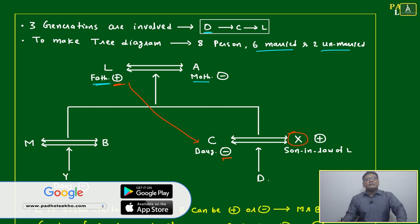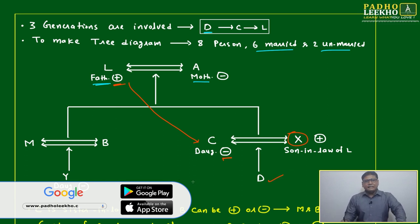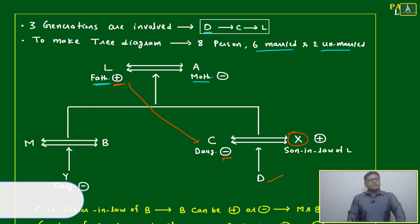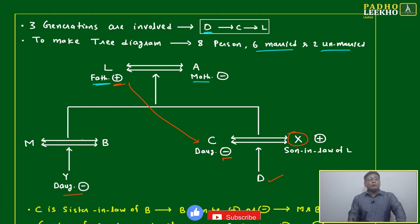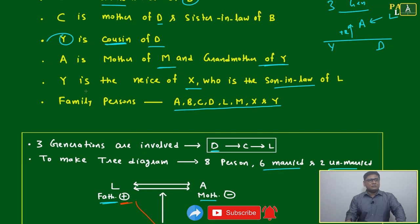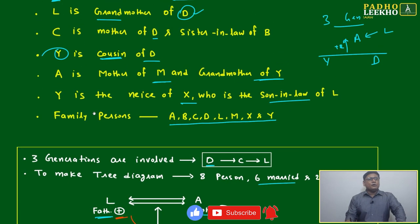C and X are husband and wife, and their child is D. On the other side, M and B are there, where their daughter could be Y. However, it is not clear who is the husband and who is the wife among M and B — that is not given at all.